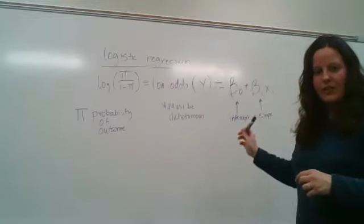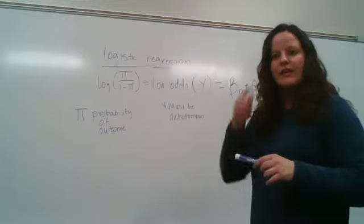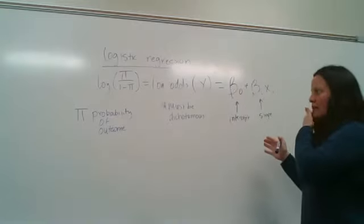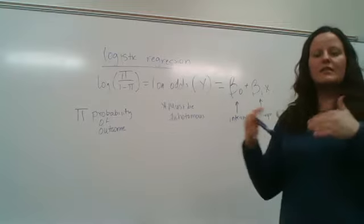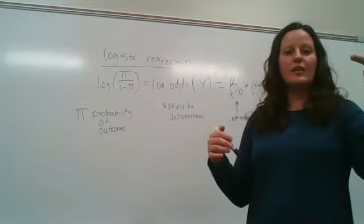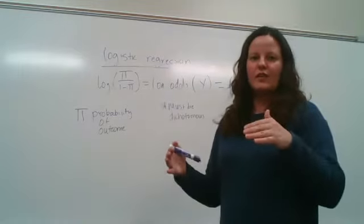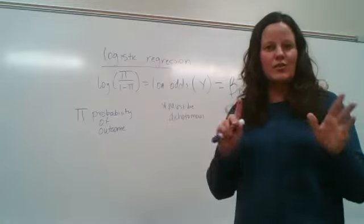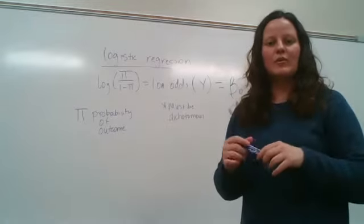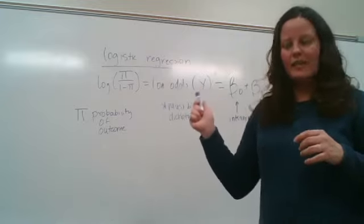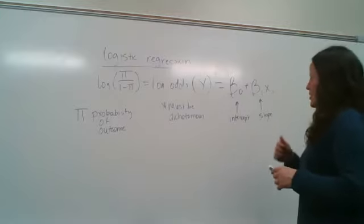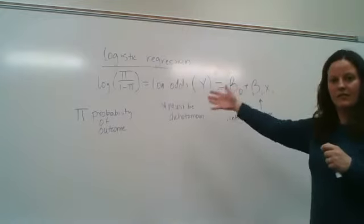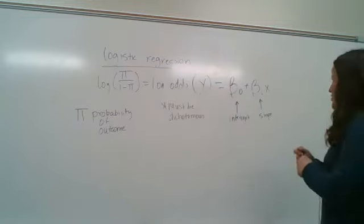Let's talk more about the slope variable, beta one, because that's largely what we're interested in when we run the logistic regression model. What we're really doing — the reason it's called an odds ratio — is because it's a relative measure: we're comparing a group who has the exposure to a group who doesn't. The intercept is informative because it tells us the odds of the outcome for the group with no exposure.